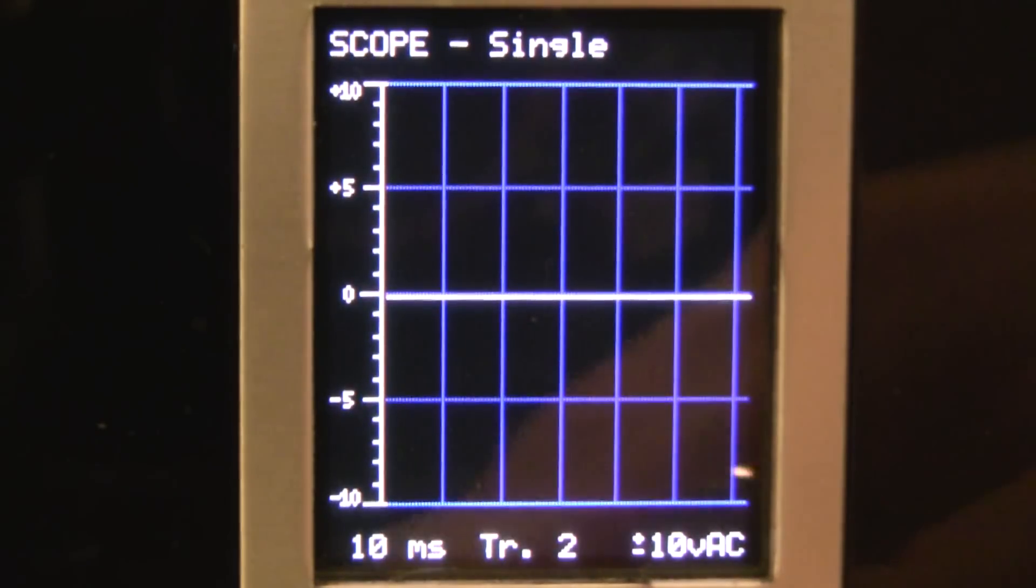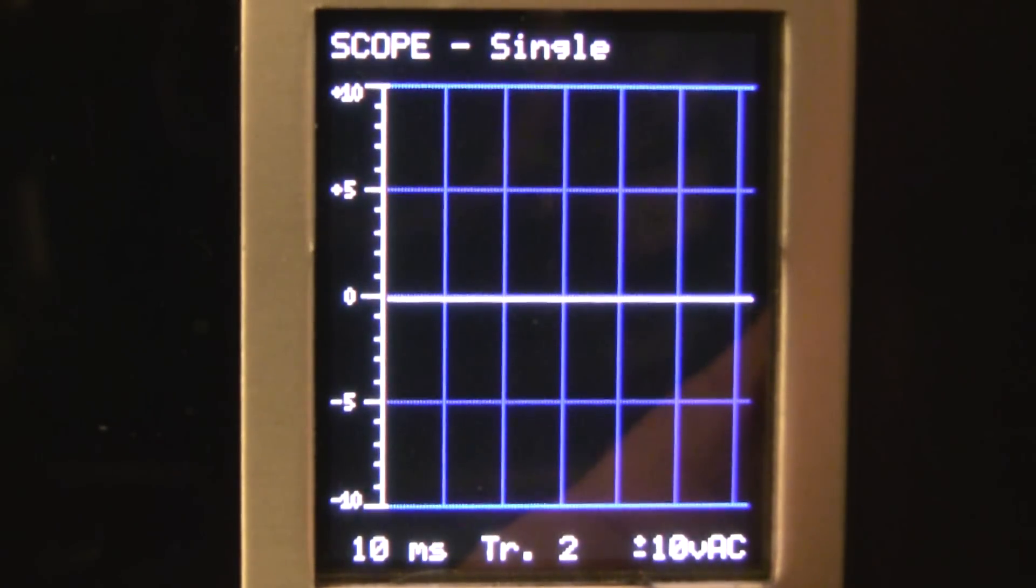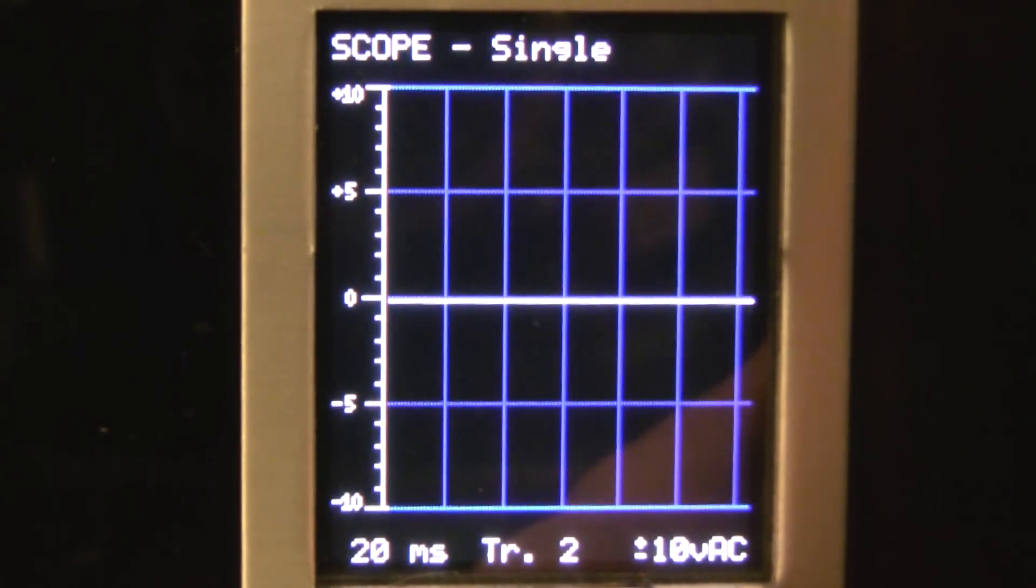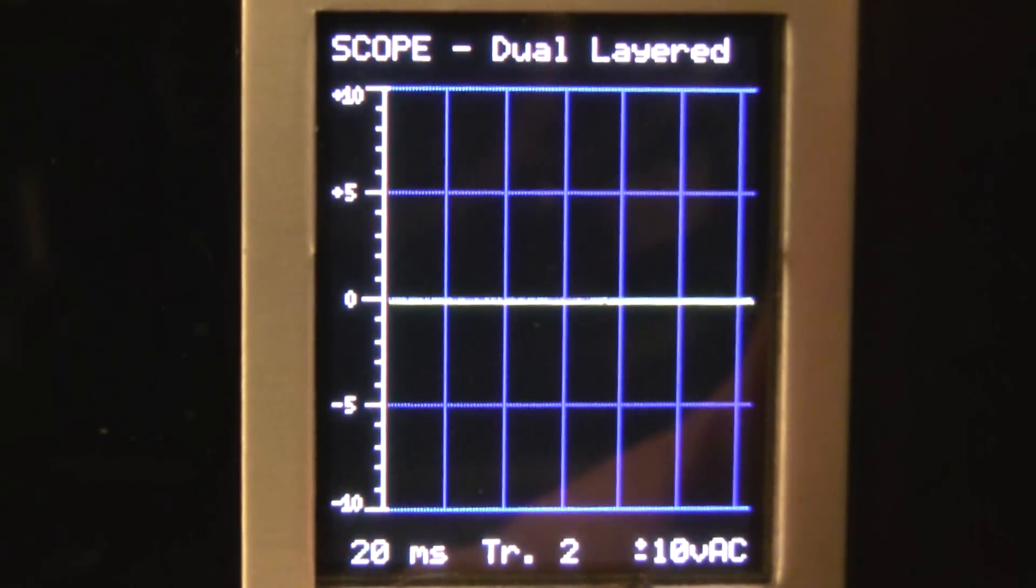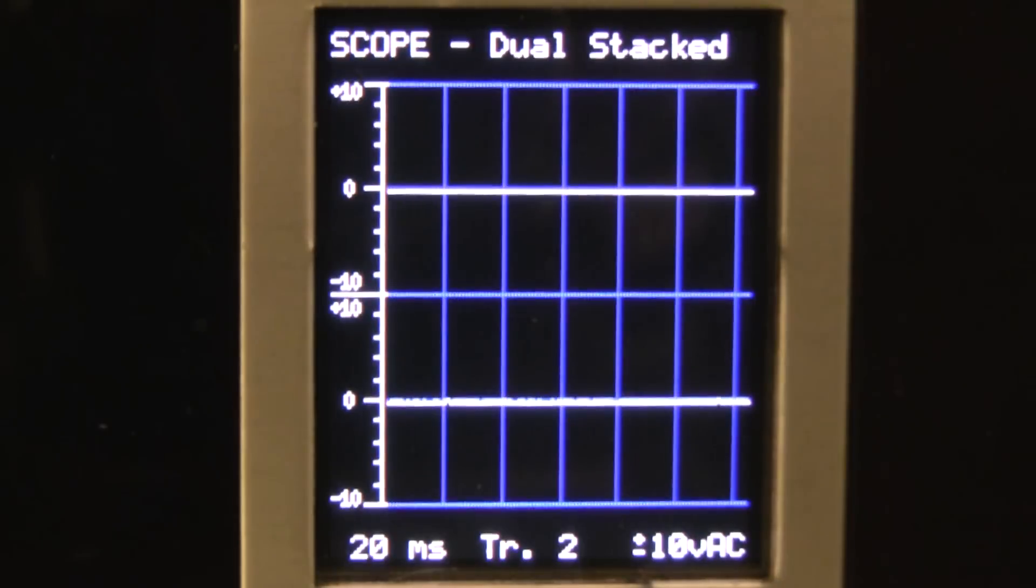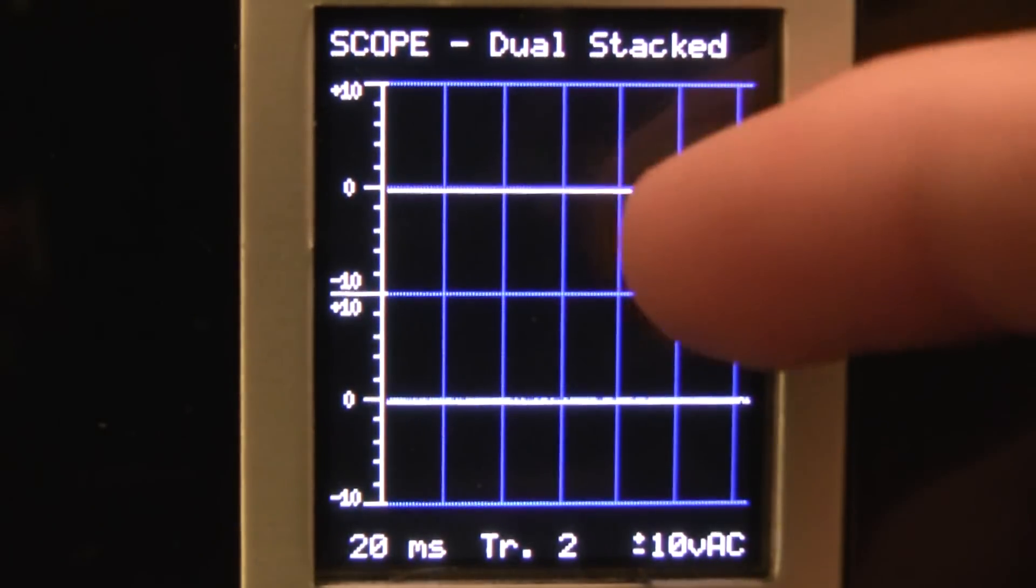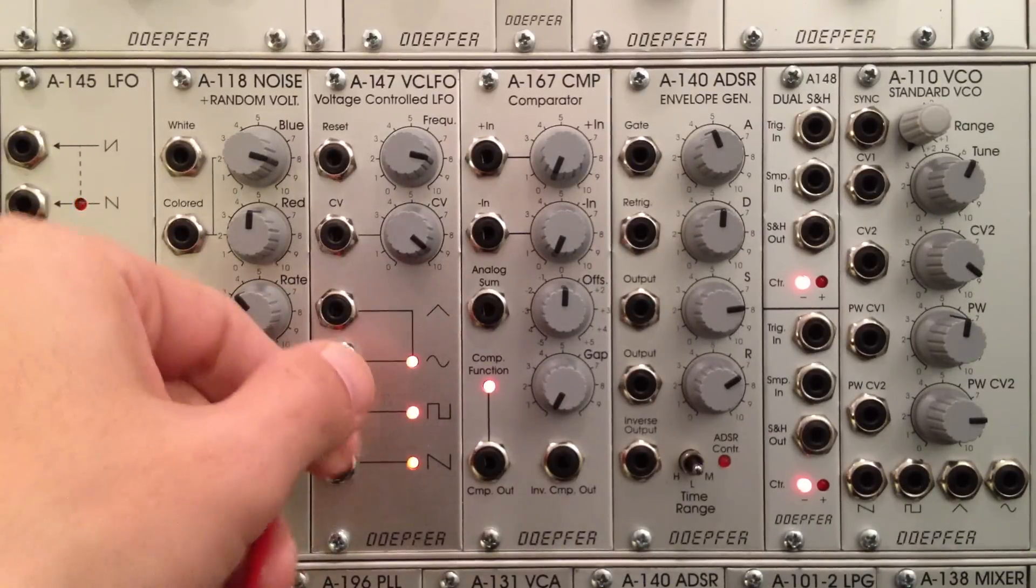So let me unpatch that, and now I'm going to flip this oscilloscope into my dual mode. There we go, I'm going to do a dual stacked mode and this is going to let me view two inputs at the same time. So I'm going to be viewing my regular waveform over here for my A147 going into one of these, the top one I believe.